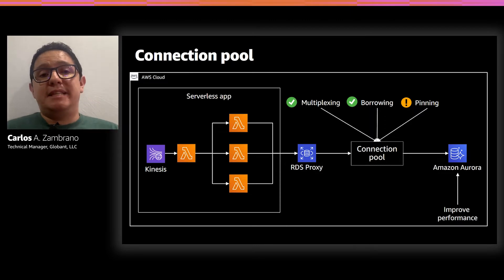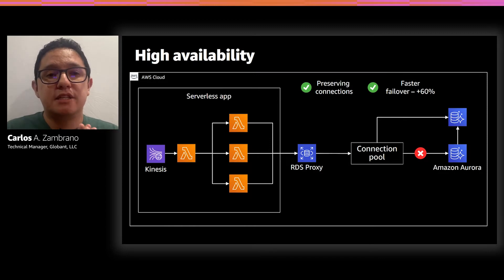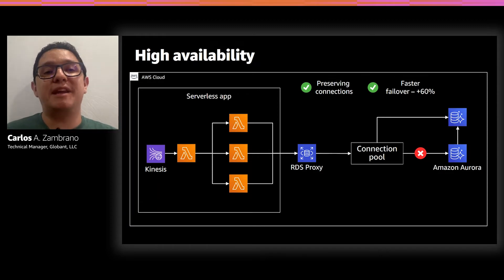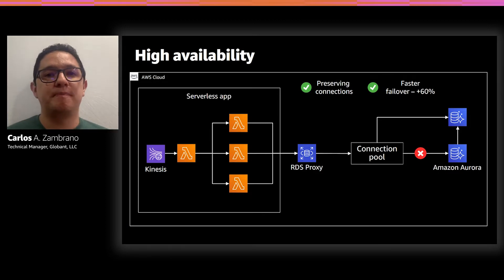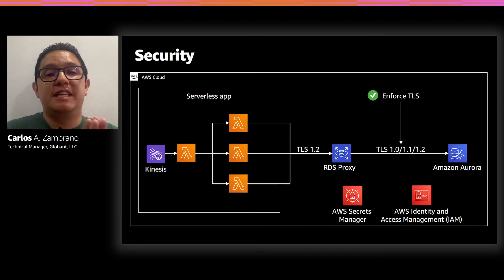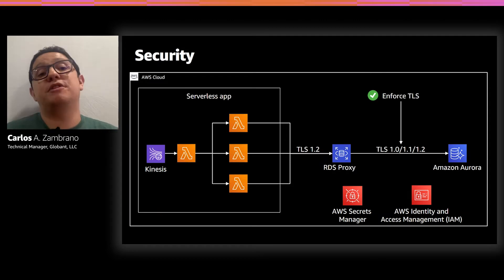About high availability, RDS proxy will increase your application's high availability and speed up failover time by up to 60–70%. For example, if failover directly to the database takes about 10 seconds, using RDS proxy reduces that to around 7 seconds. Regarding security, it enforces the use of TLS between the RDS proxy and the database, and you can also enforce the transport layer security from your client to the proxy using different parameters depending on your engine.